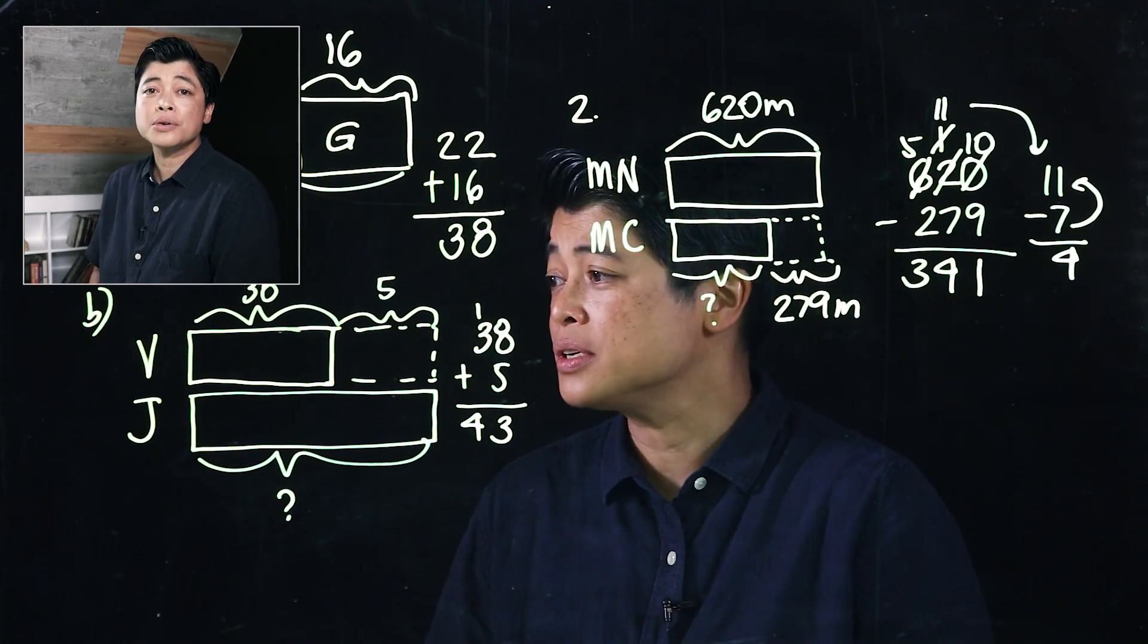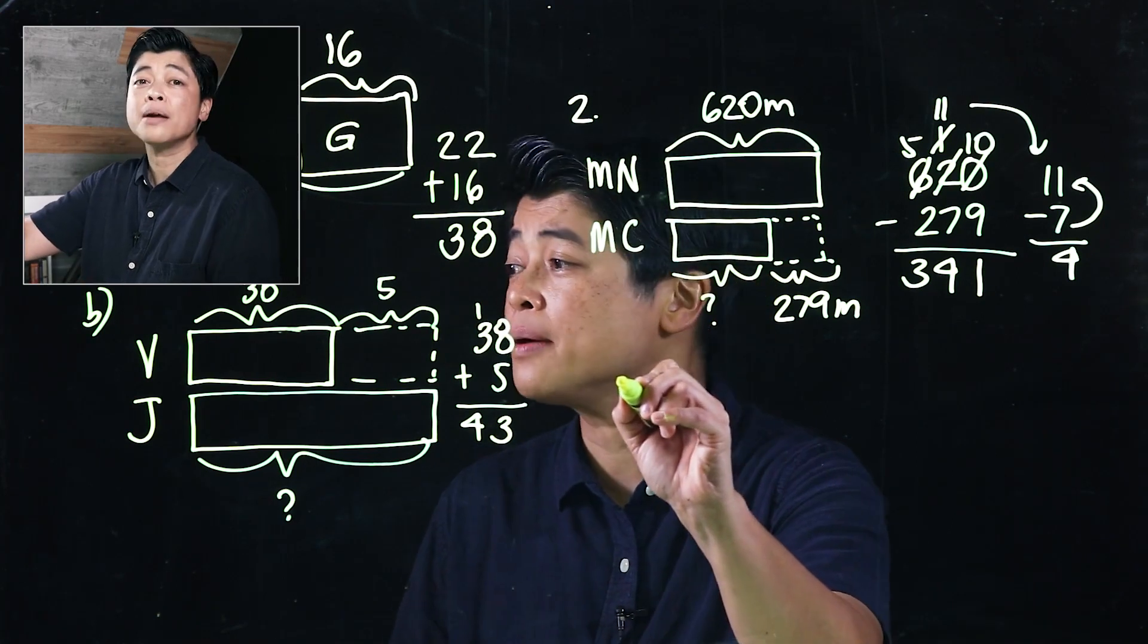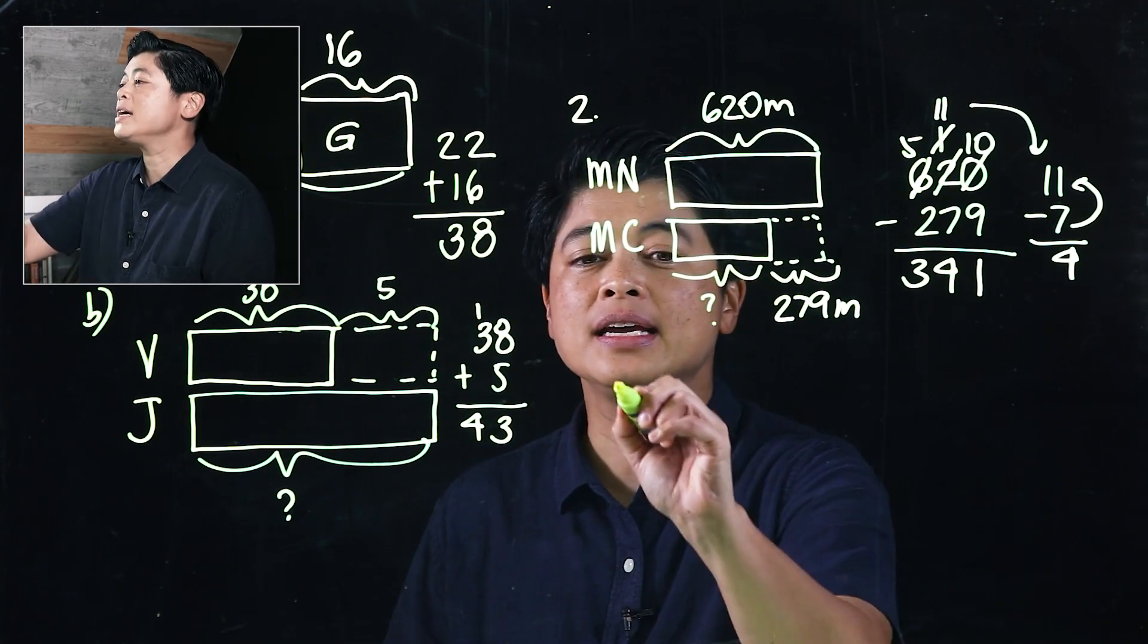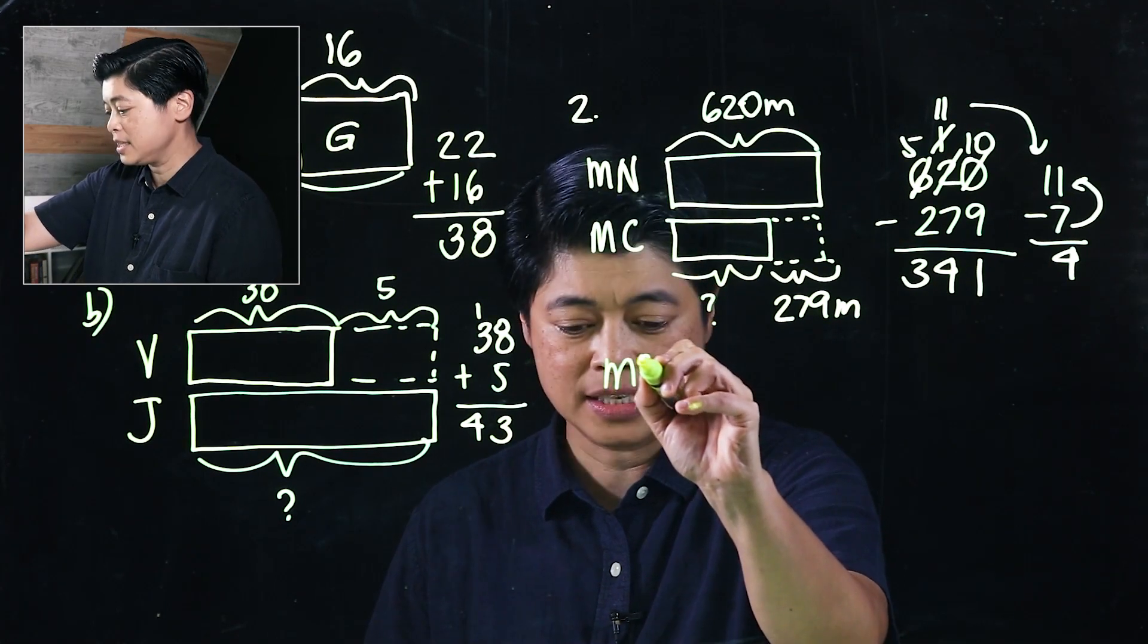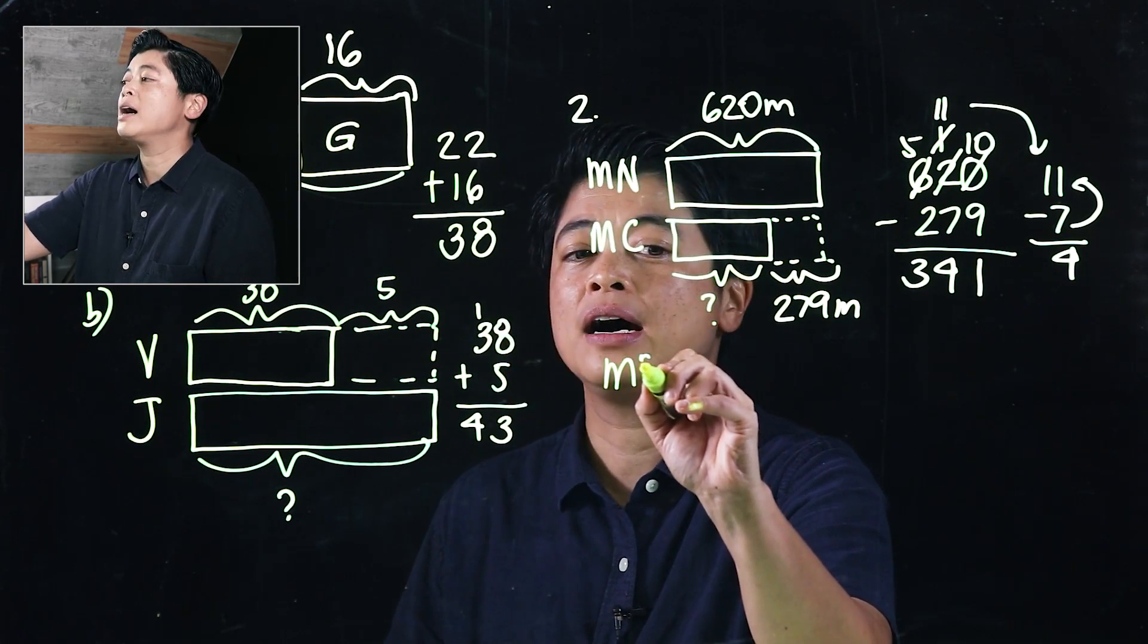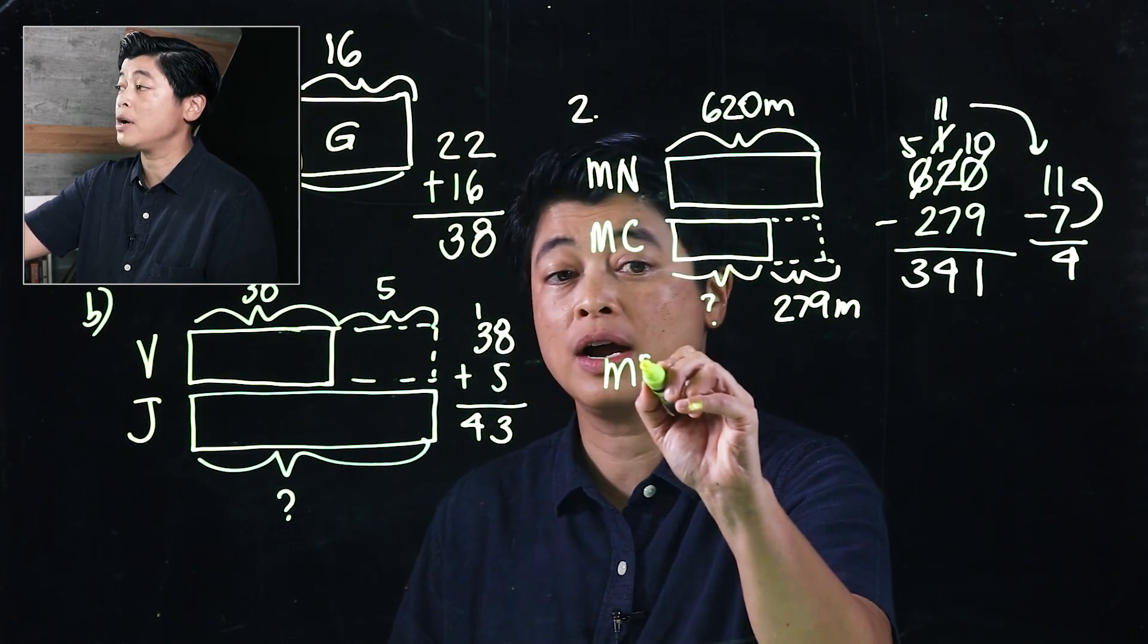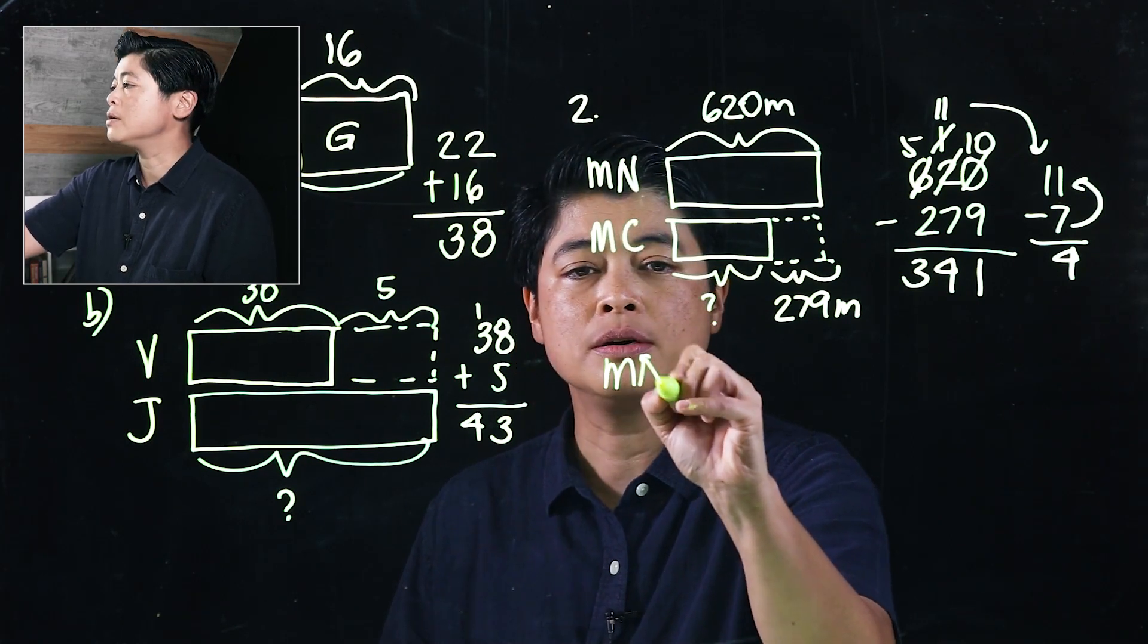The question, though, says how long are they together. So that means in their setup, they did a compare model again. So for me, I would do a part-whole model. So I'm going to draw a part-whole model: Mr. Nang, Mr. Chang. This is the question together.